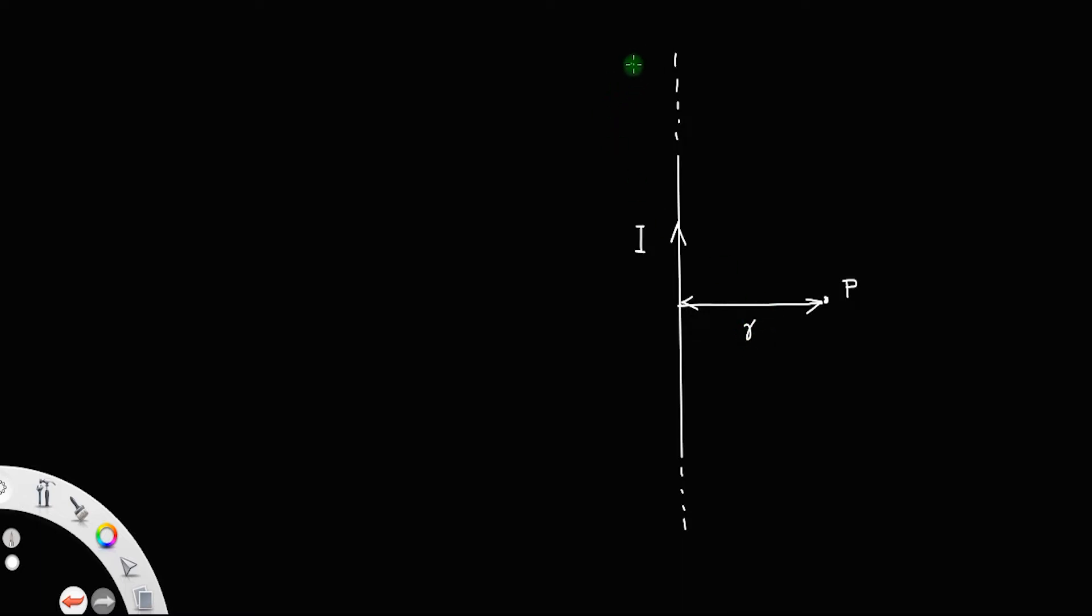Here let us say x, x dash be the infinite long straight conductor and r be the distance of the point P from the conductor.